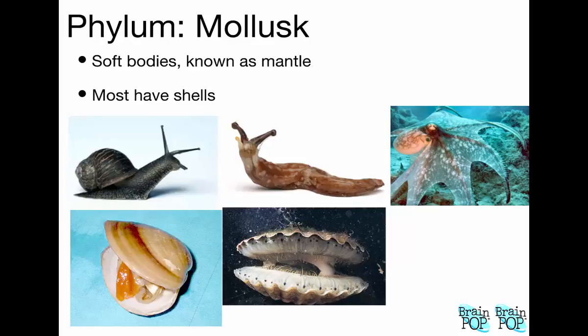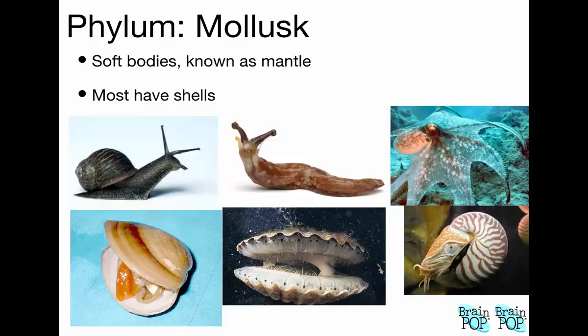A snail is basically a slug with a shell — another type of mollusk. This is a nautilus, a sea mollusk with a spiral shell that it can retract into. The shell is actually a part of their body — they make it themselves. That's different from a hermit crab, which uses shells made by something else and can climb in and out of them.